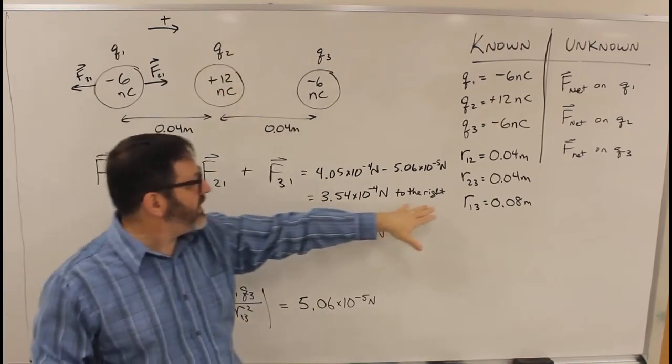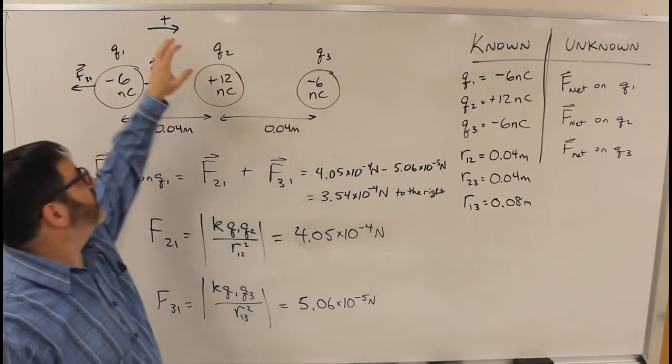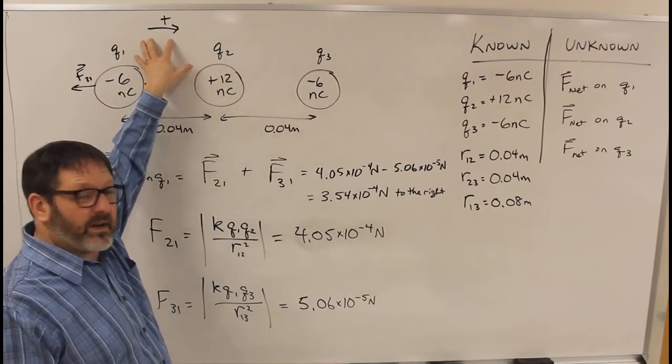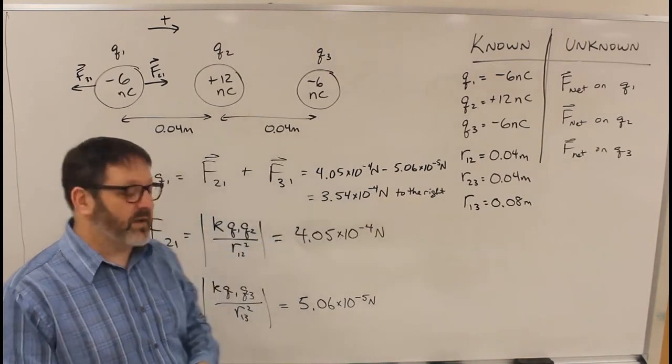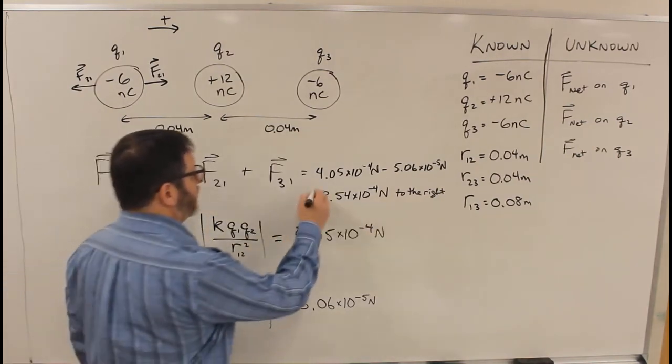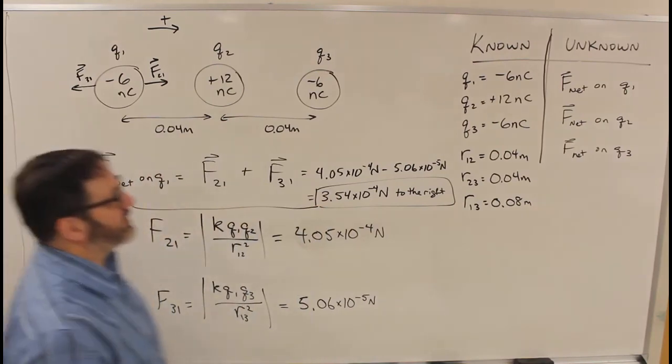So it would have been fine without 'to the right' because I had this plus in here. If you don't have an arrow indicating positive direction, then you'll need to use some words to describe the direction. So that is F net on Q1.